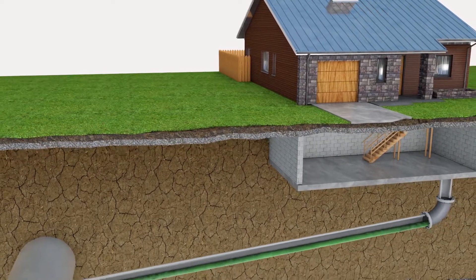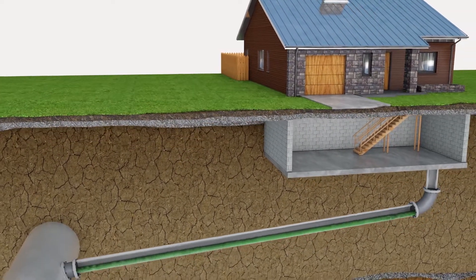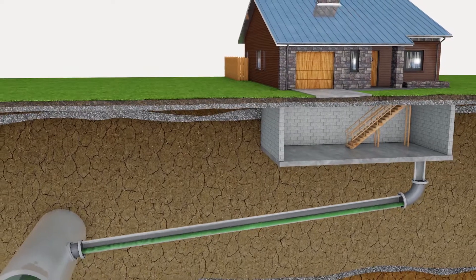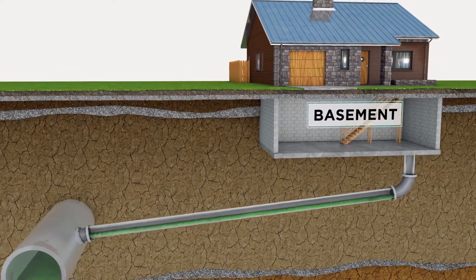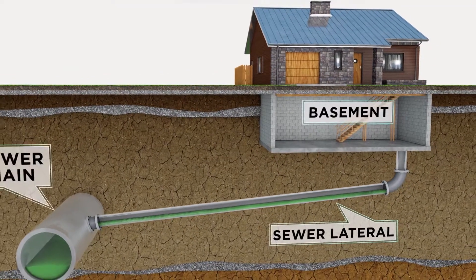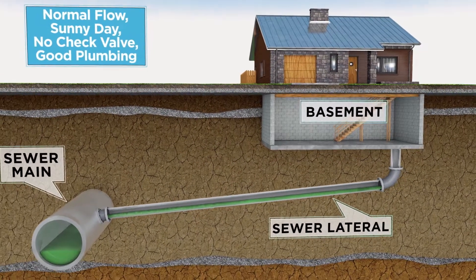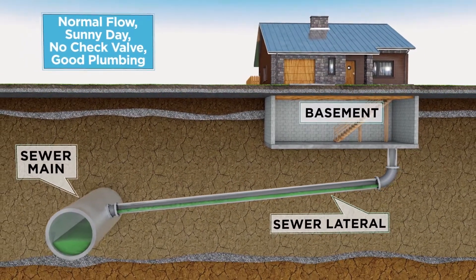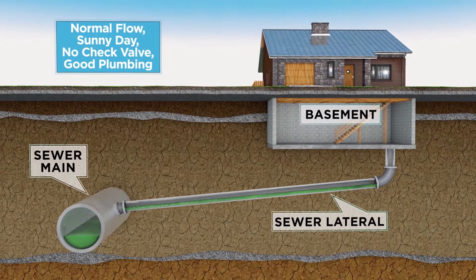This illustration shows a normal household sewage flow. The plumbing for the house is good overall, but contains no check valve to prevent a potential backward flow.